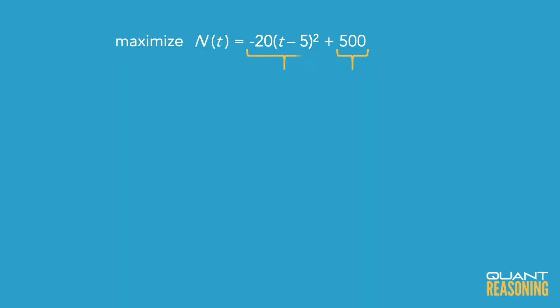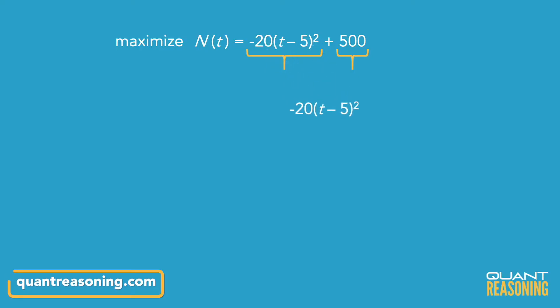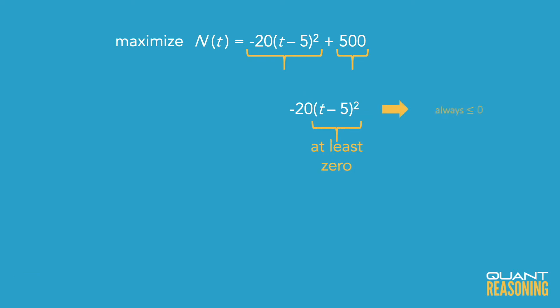So we should focus on the other term, which is negative 20 times the square of t minus 5. Now the square of something will never be negative, but we are multiplying it by something negative. So that means that overall this thing is always going to be negative, or at most zero.